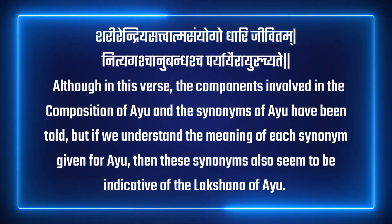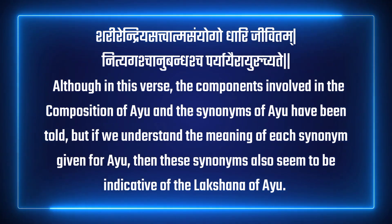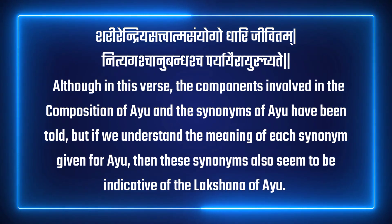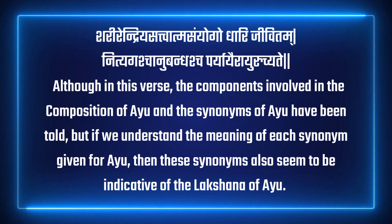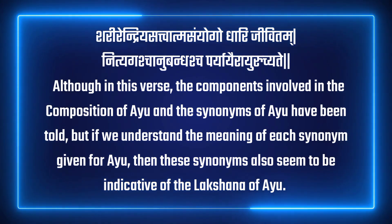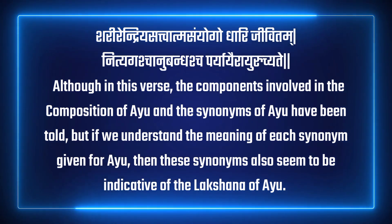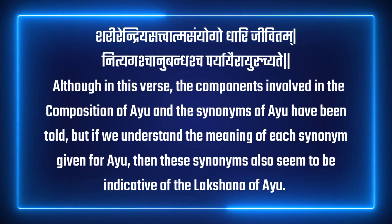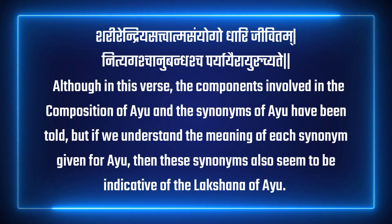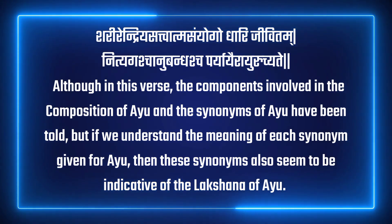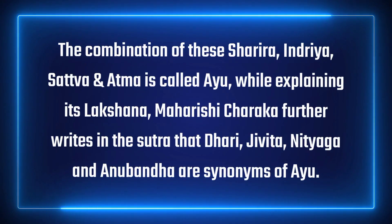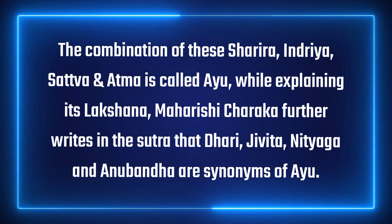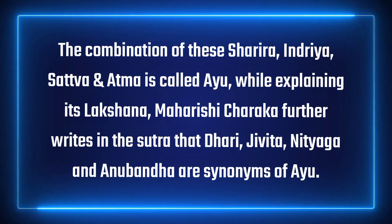In the Sutra said by Maharshi Charak, the Lakshan of Ayu has also been described as a synonym of Ayu. The speciality of Ayurveda is that it opens up its specific meaning according to the person who understands it. Although in this verse the components of Ayu and the synonym of Ayu have been told, if we understand the meaning of each synonym, then this synonym also seems to be indicative of the Lakshan of Ayu. The combination of sharir, indriya, sattva and atma is called Ayu. While explaining its Lakshan, Maharshi Charak further writes that dhari, jivita, nityaga and anubandha are synonyms of Ayu.